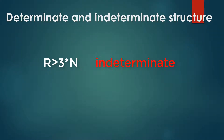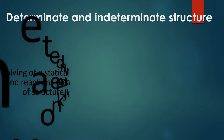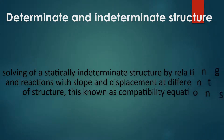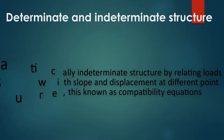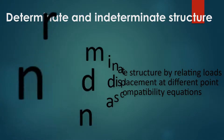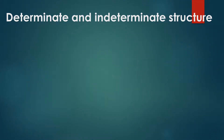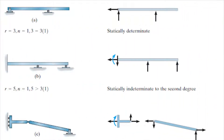Statically indeterminate structures can't be solved using equilibrium equations alone. Solving a statically indeterminate structure involves relating loads and reactions with slope and displacement at different points of the structure — this is known as compatibility equations. Compatibility equations involve the geometric and physical properties of the structure. The figure here shows some examples of statically determinate and indeterminate structures.